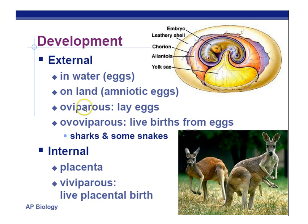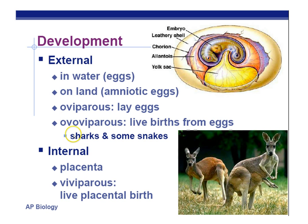Oviparous means just laying eggs — the prefix ova refers to eggs. Ovoviviparous: 'ovi' refers to eggs, 'vi' refers to life — so ovoviviparous means live birth from eggs. Sharks and some snakes have eggs inside them that hatch internally, then the young come out — it looks like live birth but there was no placenta or umbilical cord involved. Oviparous just lays eggs like birds and reptiles; ovoviviparous means live birth from internal eggs.